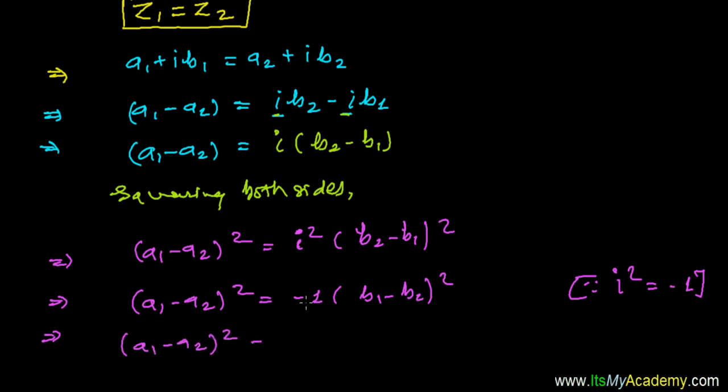This minus one, when it will come, this will be plus, and now it's (b2 minus b1) all square.